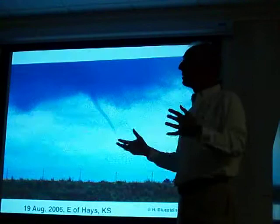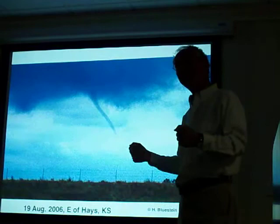Driving down I-70 toward Norman at the end of summer, temperatures were in the 70s — it had been 100 — and all of a sudden there's a funnel cloud. Go figure. It's a landspout.